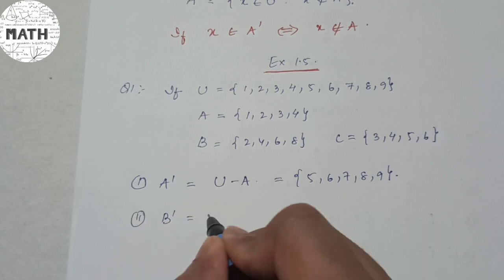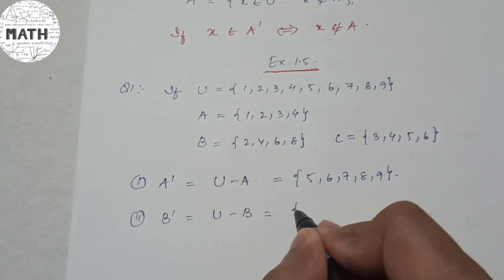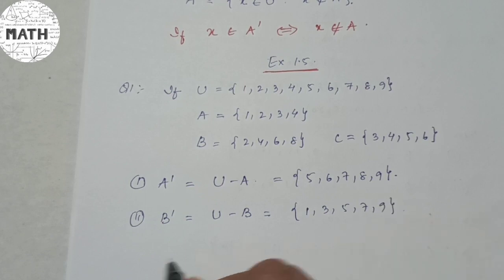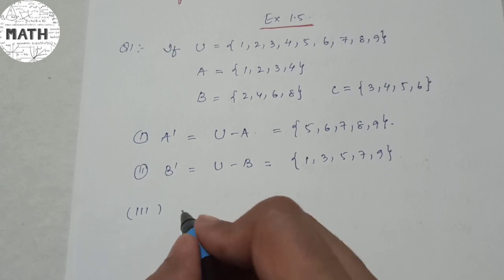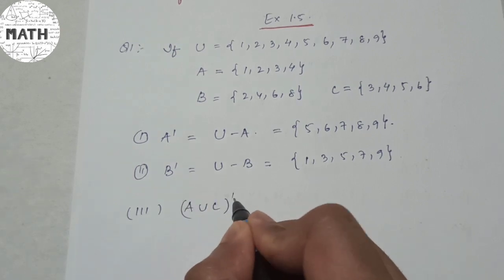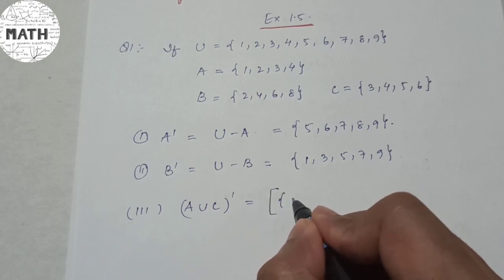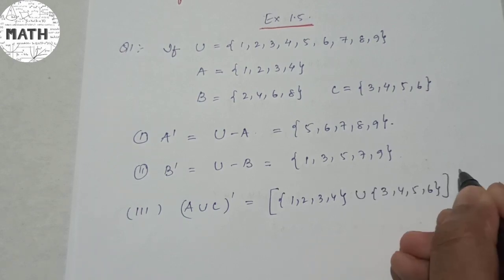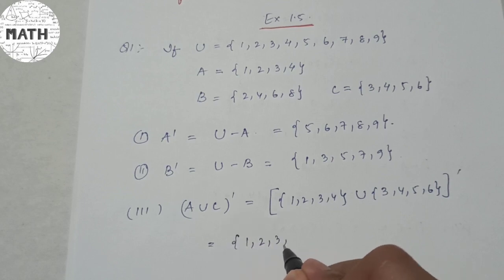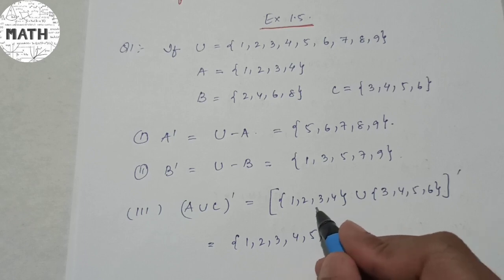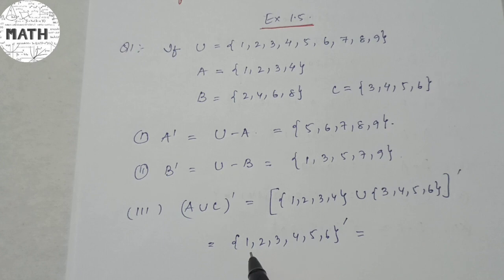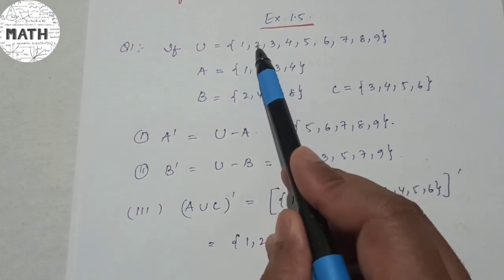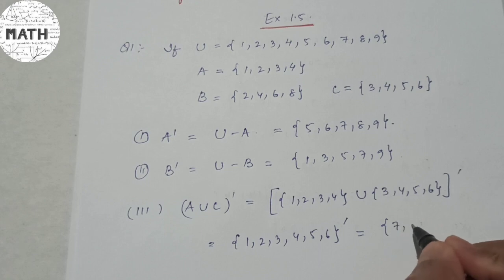B complement: B' = U minus B, removing 2, 4, 6, 8 from U gives {1, 3, 5, 7, 9}. For number 3, find (A union C) complement. First, A union C = {1, 2, 3, 4} union {3, 4, 5, 6} = {1, 2, 3, 4, 5, 6}. Then taking the complement, I remove {1, 2, 3, 4, 5, 6} from U, so the answer is {7, 8, 9}.